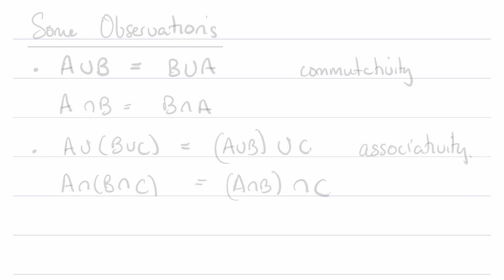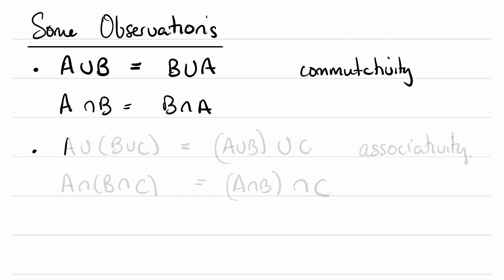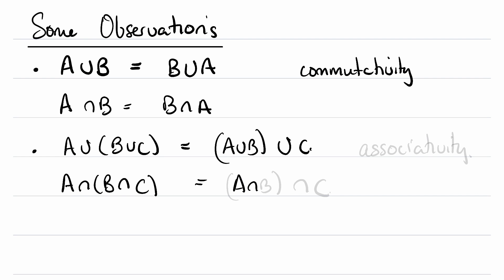Before we move on, we've just covered the union and the intersection — here are some observations worth noting. First, commutativity: A union B equals B union A, and A intersect B equals B intersect A. There's also associativity: A union B union C equals (A union B) union C, and similarly A intersect B intersect C equals (A intersect B) intersect C.